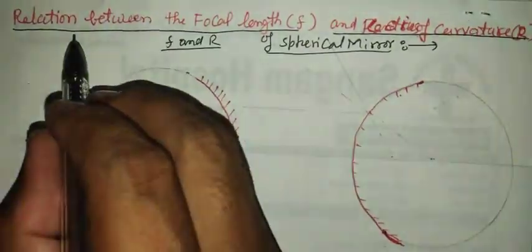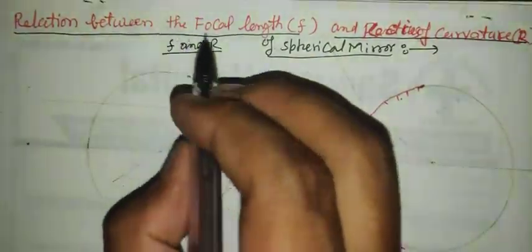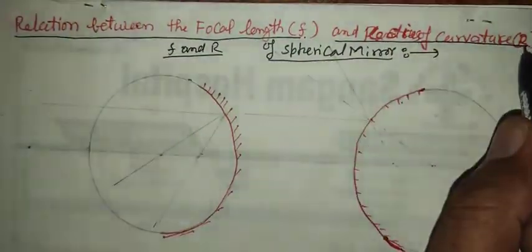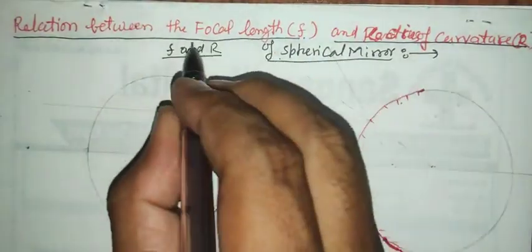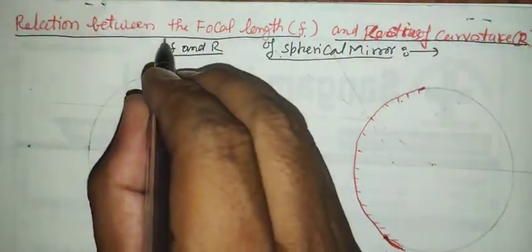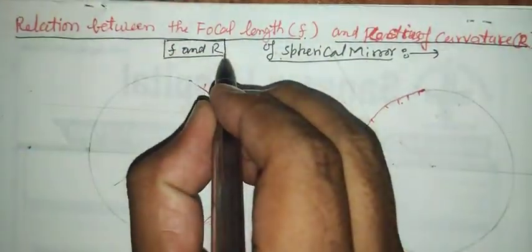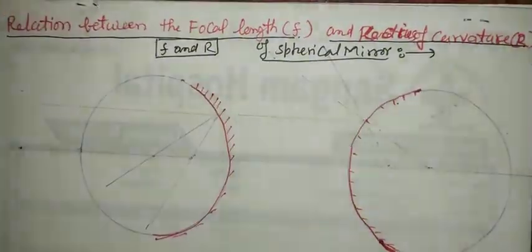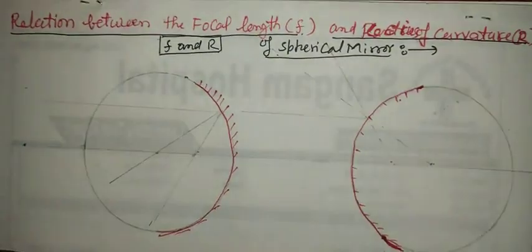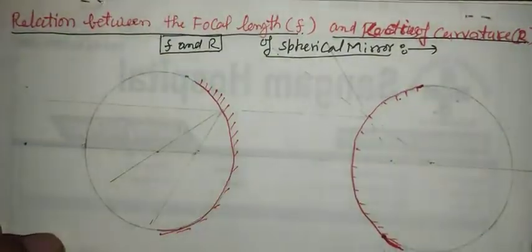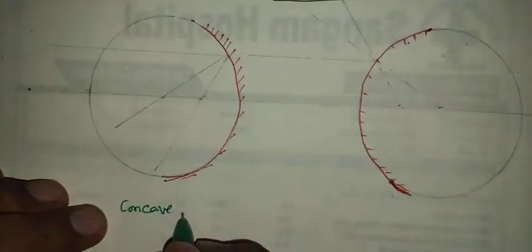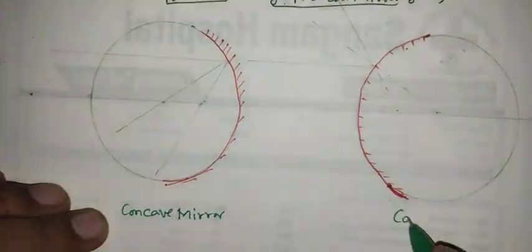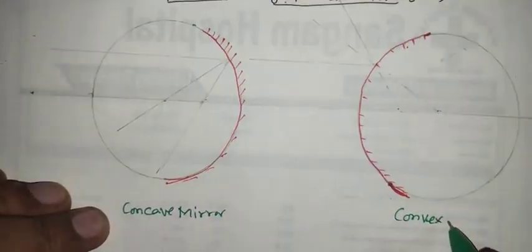Hi everyone. We are going to make a relationship between focal length f and radius of curvature r of a spherical mirror. We will establish the relationship between focal length and radius of curvature in case of a concave mirror and convex mirror also.